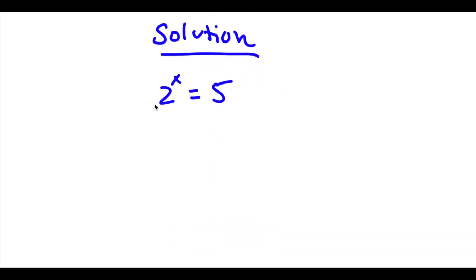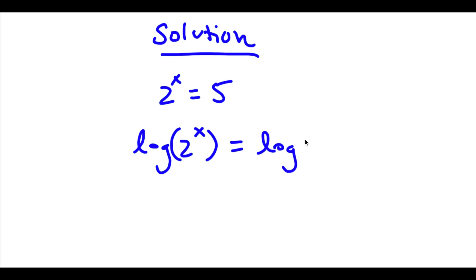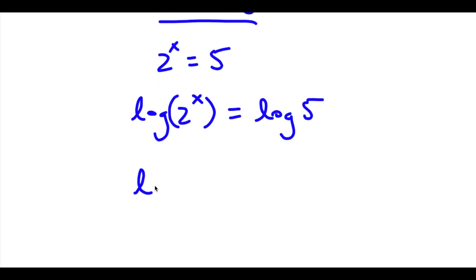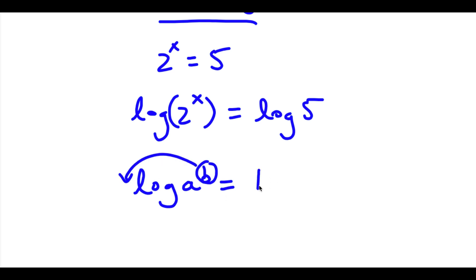Now what I'm going to do is I'm going to take the log on both sides. So now I have log 2 to the power of x is equal to log 5. And now I can use an important property of logarithms which states that if I have something in the form log a to the power of b, I can move this exponent b to the front of the logarithm. So this would equal b times log a.